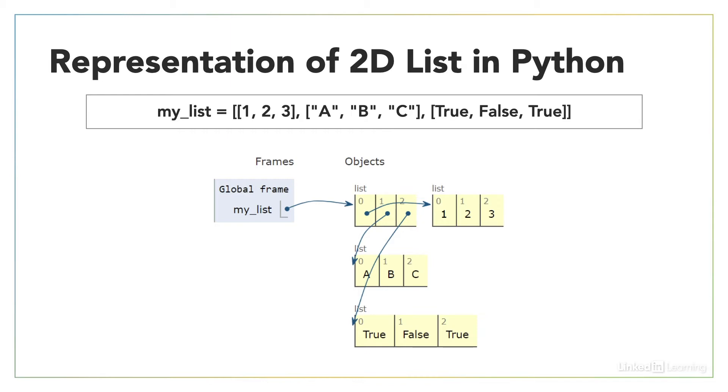So take a look at this visual representation. We have a list definition in code here. MyList is equal to list containing list, another list, and another list. And beneath that we have a visualization or a visual representation of how that would be stored inside of Python.